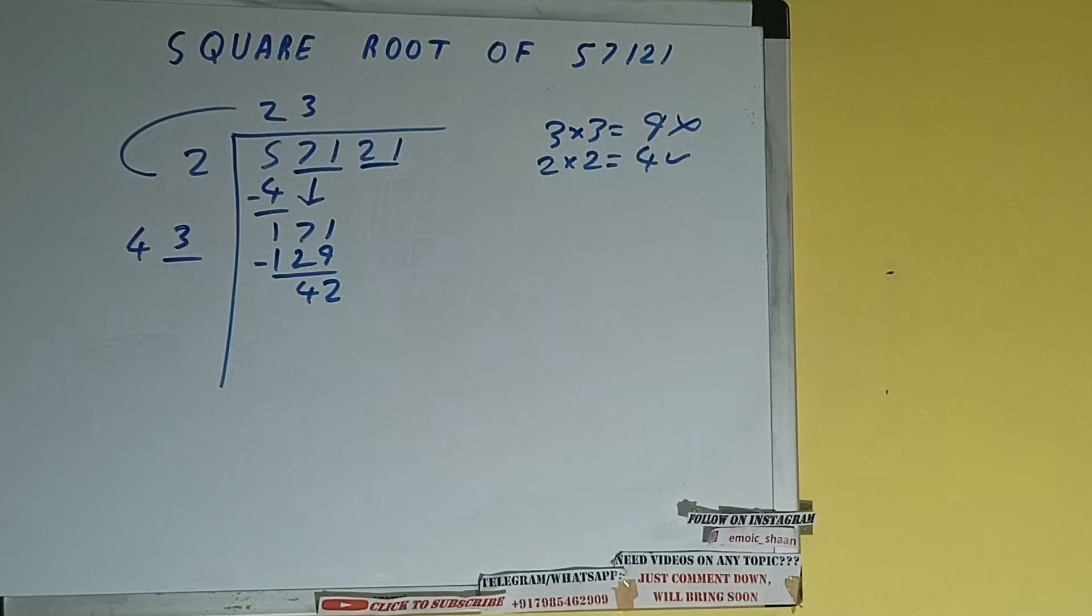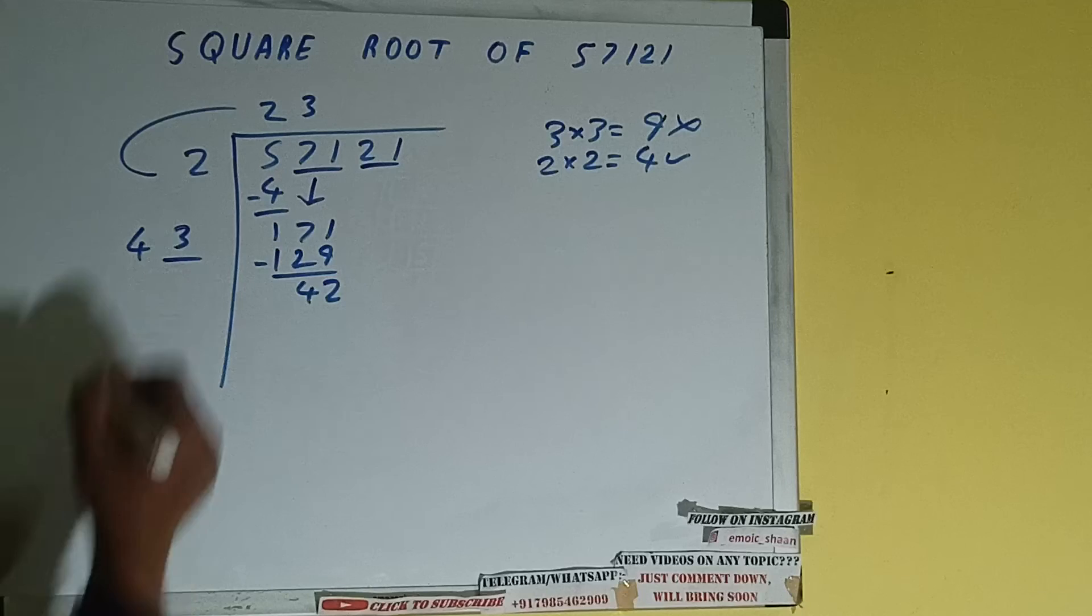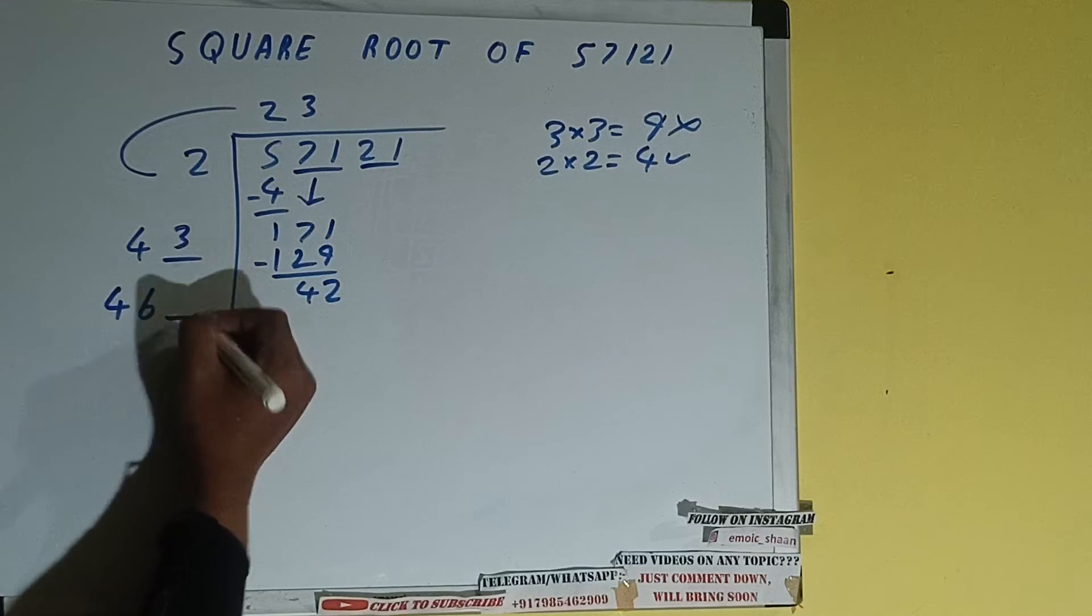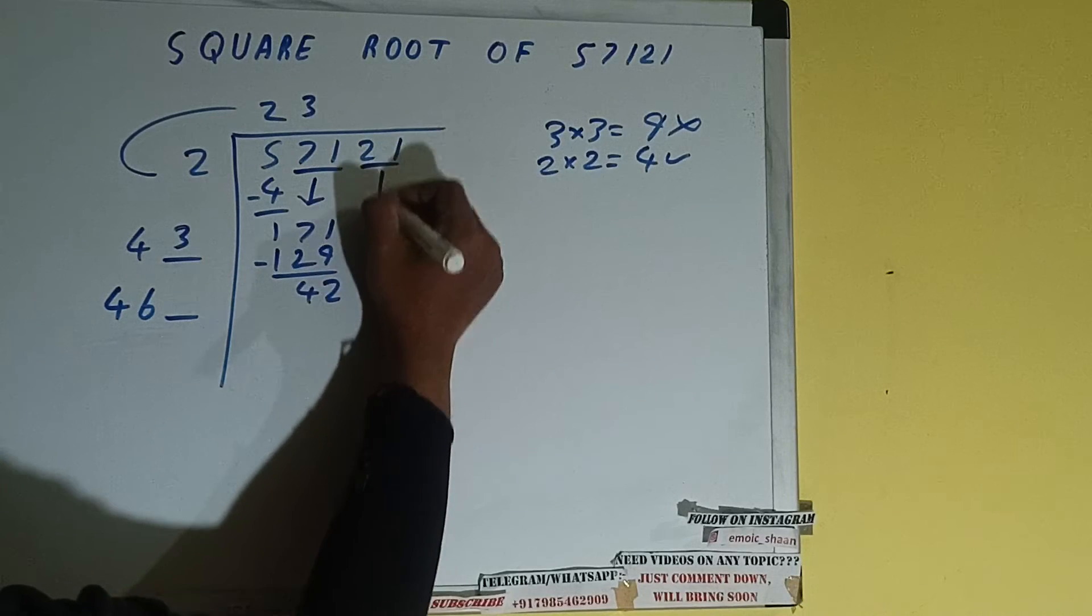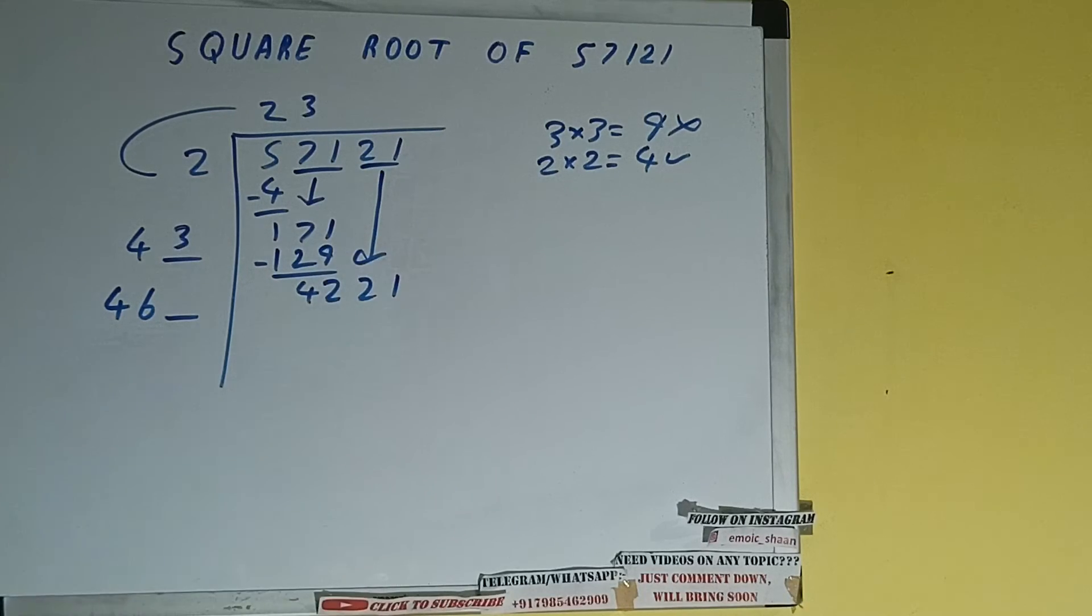Now 43 into 3 we did so add both. So 43 plus 3 will be 46 and keep a digit extra, and this number we need to make it big. So bring the next pair down and it will be 4221.